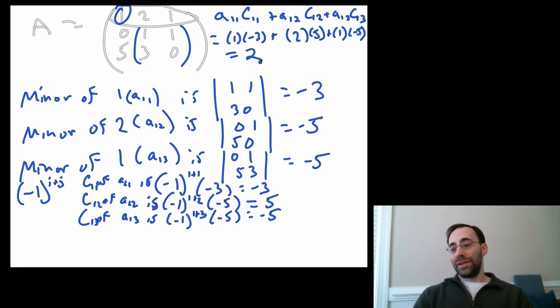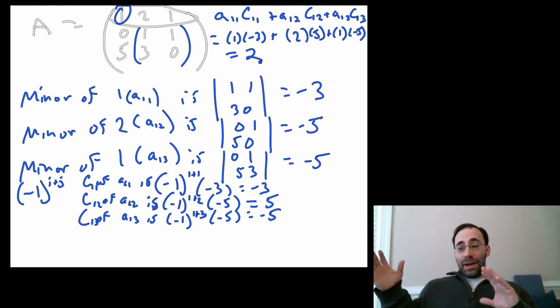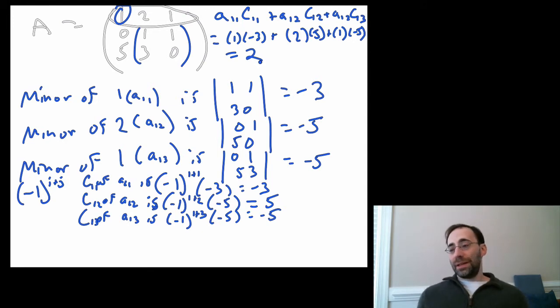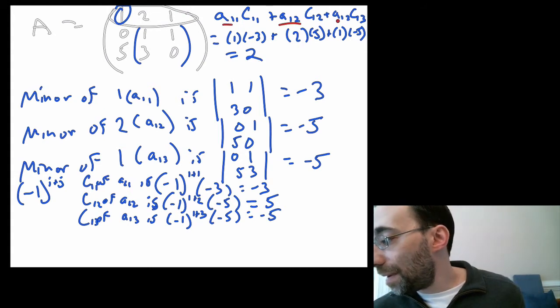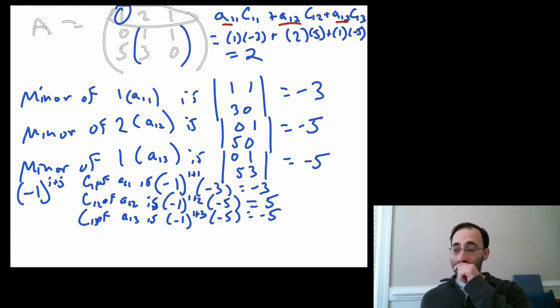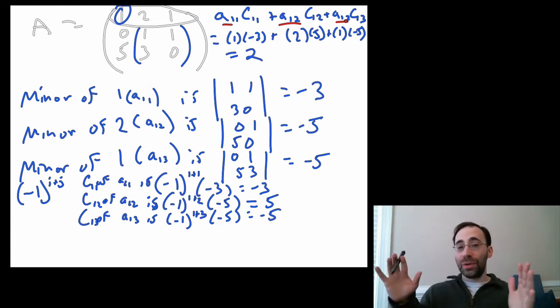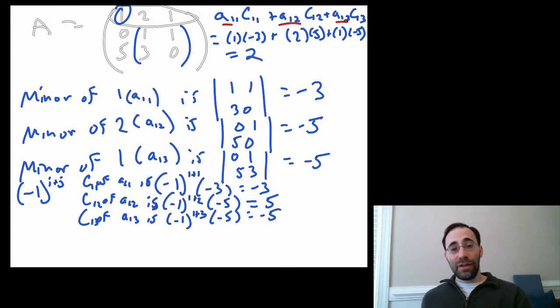Now, this works for any square matrix of any size, and you can use any row and any column to expand. So oftentimes it's better to actually choose a different row or column that has more zeros in it. Why? Because when you're multiplying by the elements themselves, if the elements are zero, that term is zero and you don't need to do anything. So you can avoid even computing that cofactor for that element if the element itself is zero.